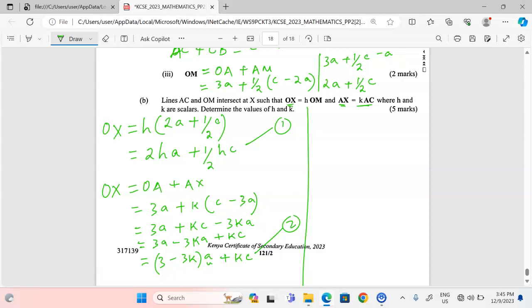Now with the two expressions, we can equate the coefficients of each vector. If it is vector a from the first expression, the coefficient of vector a is 2h, so we equate 2h with the coefficient of vector a in the second expression, that is 3 - 3k. That is one equation. The second equation you get it after equating the coefficients of vector c. For vector c in the first expression we have ½h, which should be equated to the coefficient of vector c in the second, which is k.